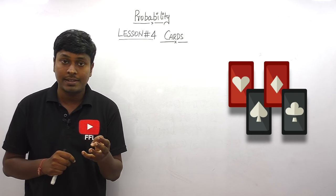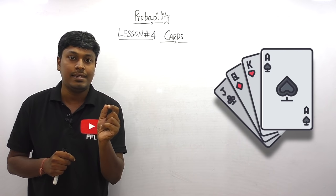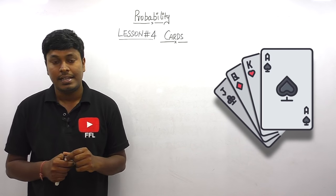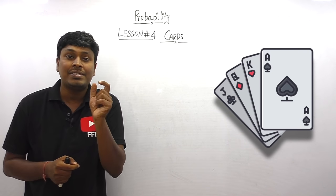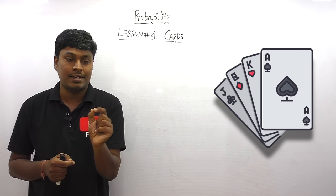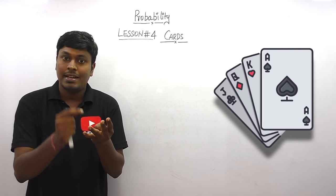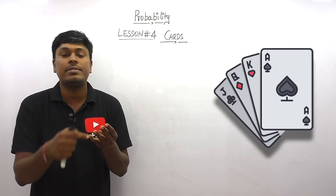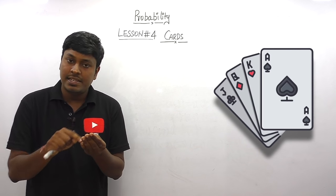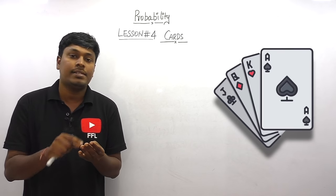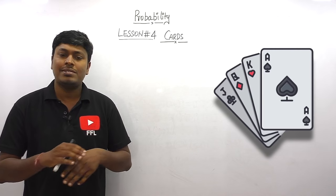Another important thing is the word called face cards. The meaning of face cards: in a pack of 52 cards we have 16 face cards. The face cards are ace, jack, king, and queen. Each shape has four face cards, so totally 16 cards are called face cards.